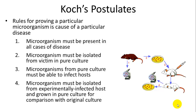Koch came up with these postulates — a way in which you can definitively determine that a certain pathogen is affecting the host and causing its mortality. If it passes this test, then you can attribute the disease to the microorganism.